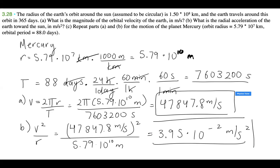So that's the orbital acceleration and orbital velocity for Mercury — and that's it for problem 3.28. I hope you found that helpful. If you have any questions, please feel free to leave them in the comments and I'll get to you as soon as I can. If you'd prefer, you can also send me an email — you can find it under my About section. Thank you so much for watching. Please don't forget to like and subscribe, and see you next time. Bye!